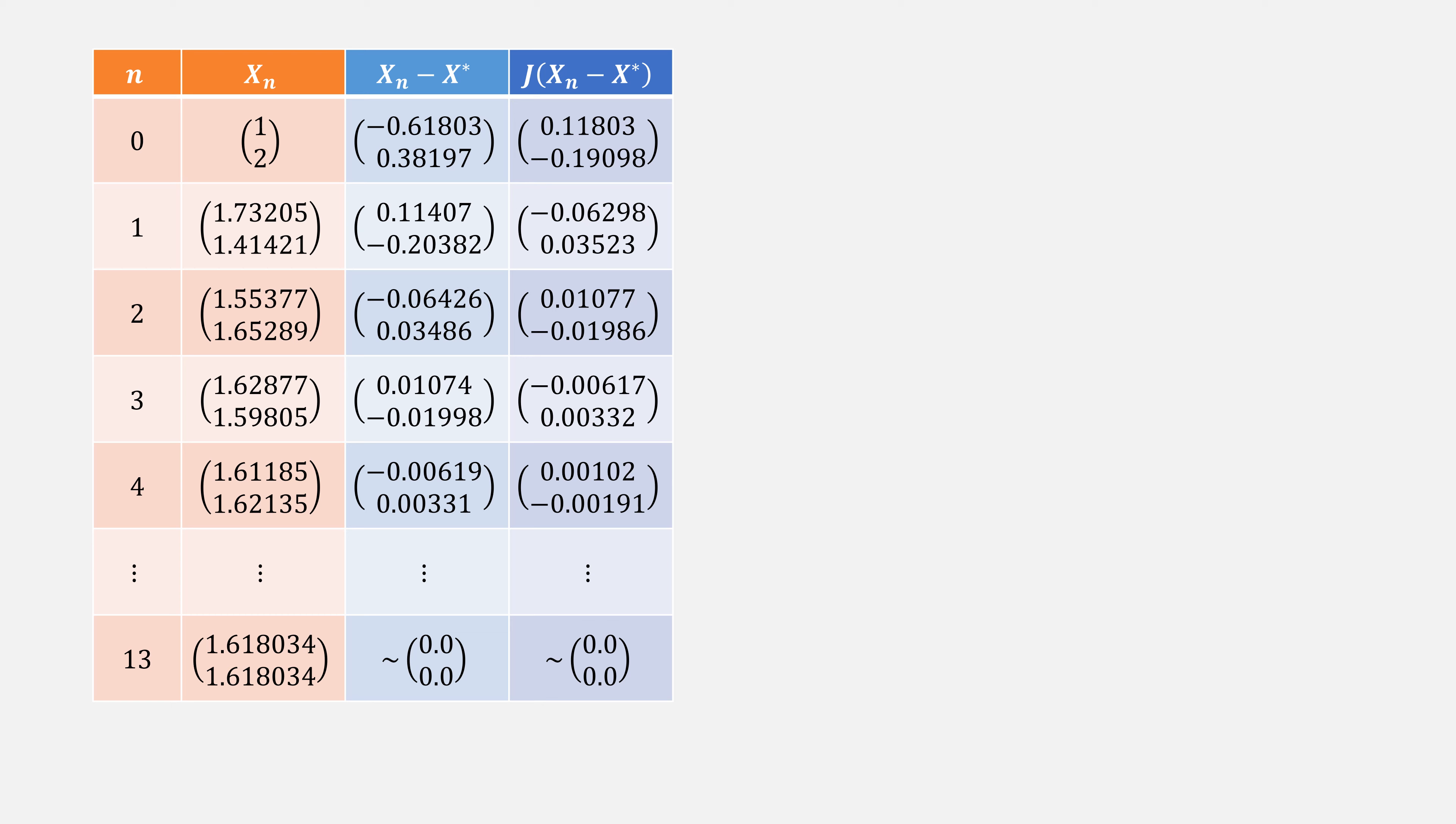Also, if you multiply the Jacobian times each of those differences, you'll notice that each new difference is essentially the Jacobian times the old difference.